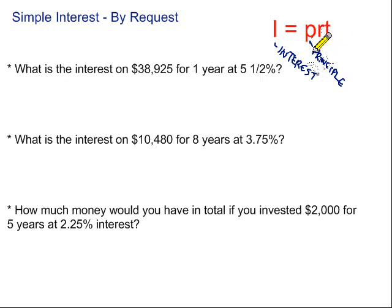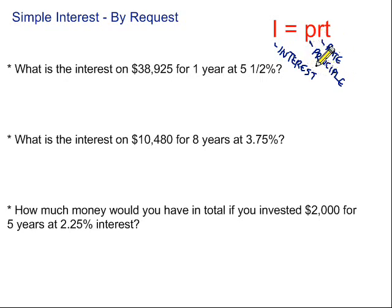R stands for the rate — the interest rate — and that's as a decimal. So if we're given a percent, we need to convert it to a decimal by moving the decimal point two spots to the left. And T stands for time in years.